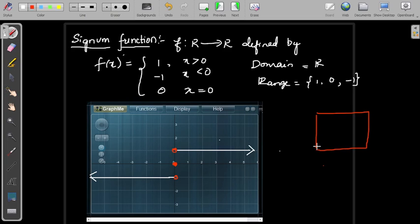So it is like this: when input is positive, x greater than 0, output is always 1.